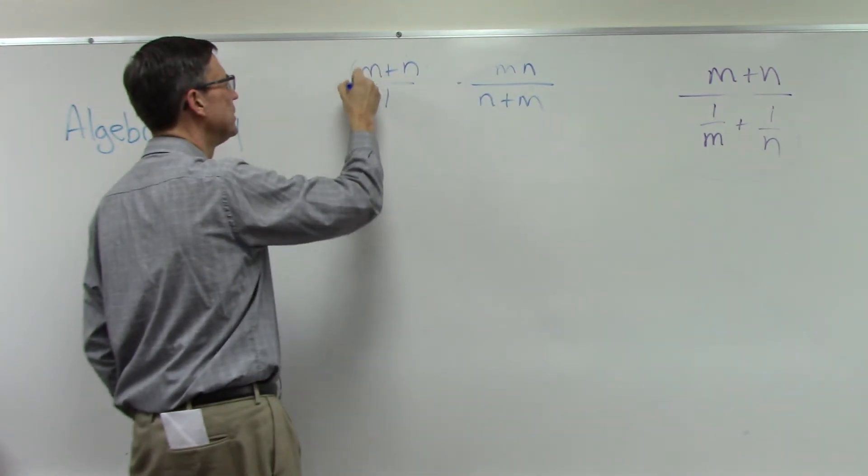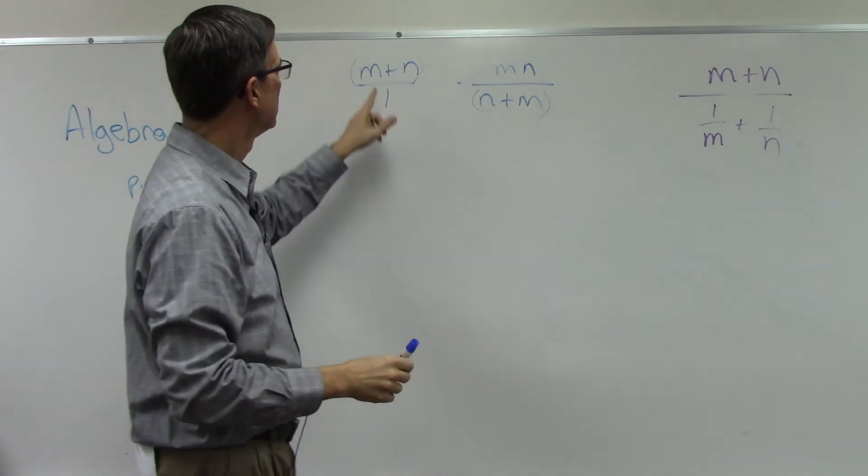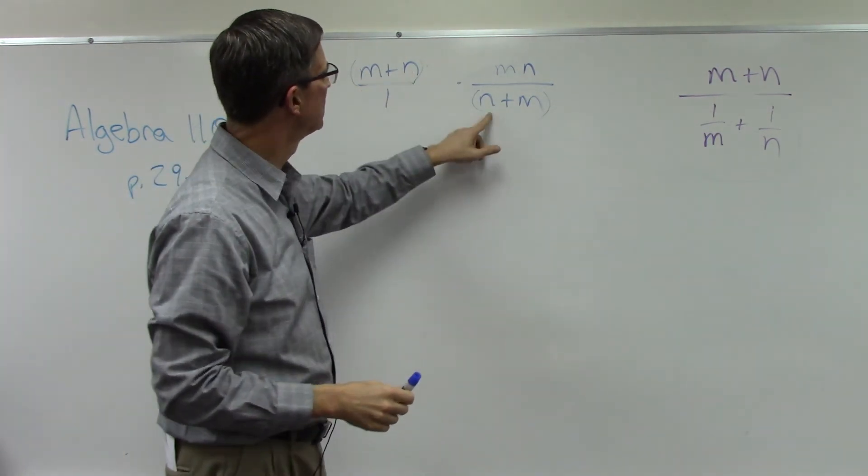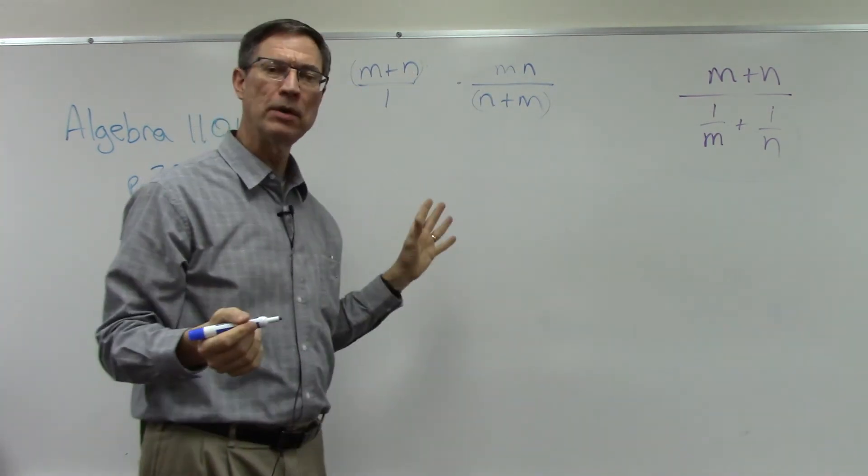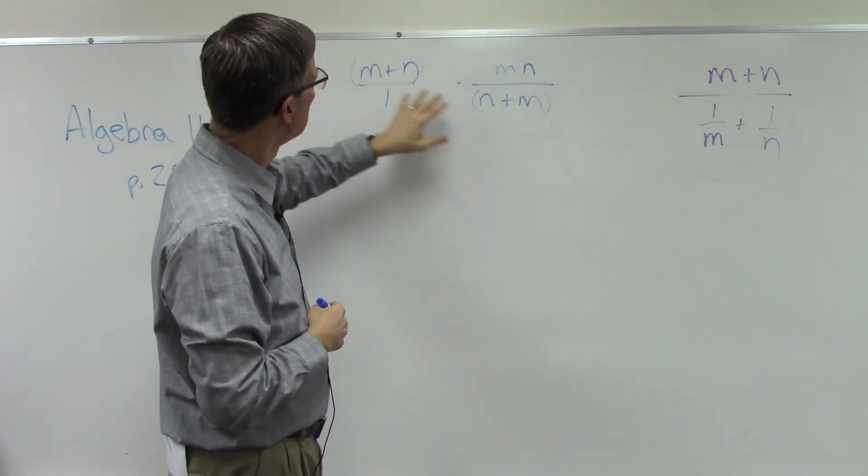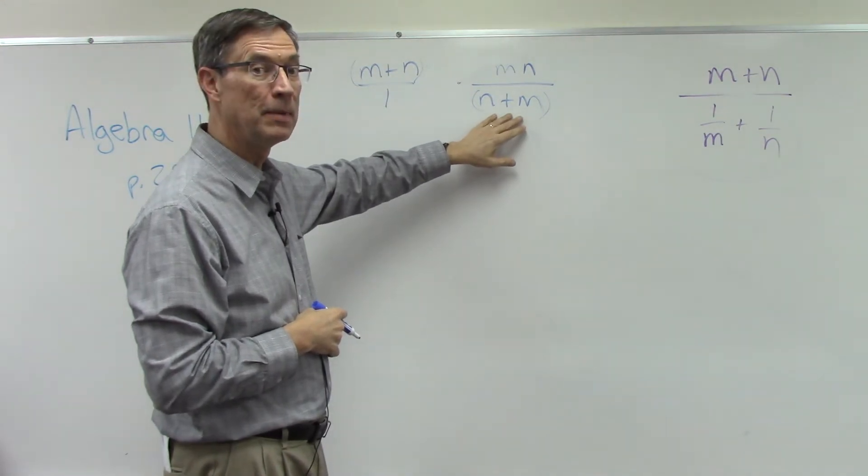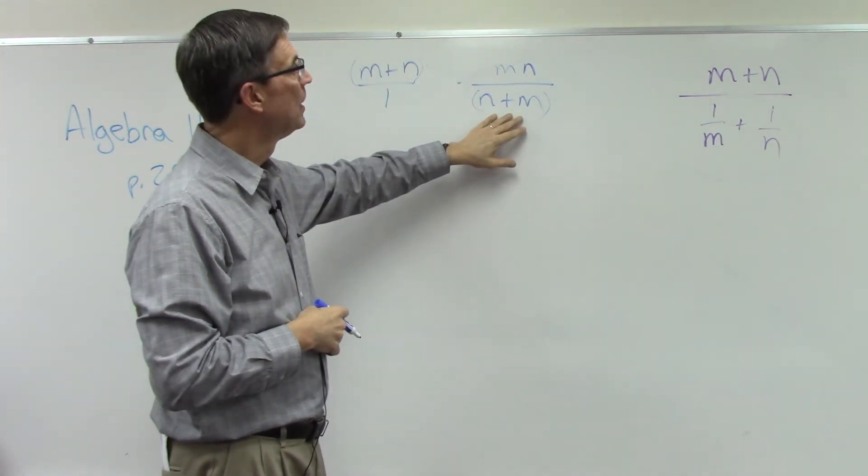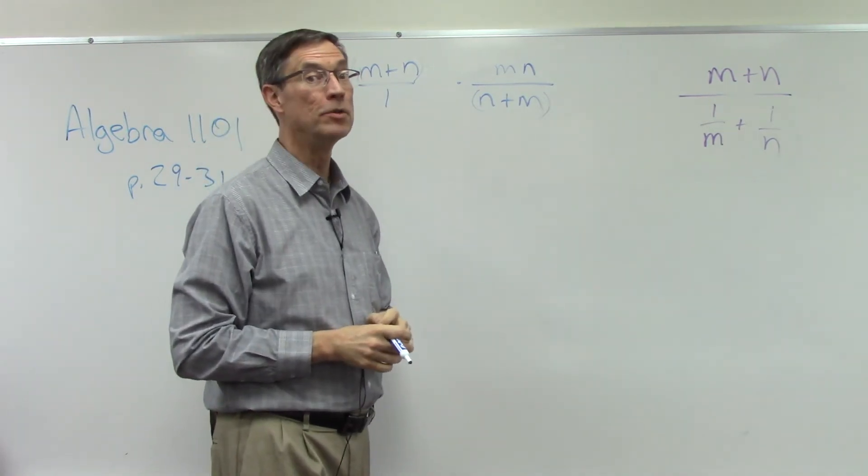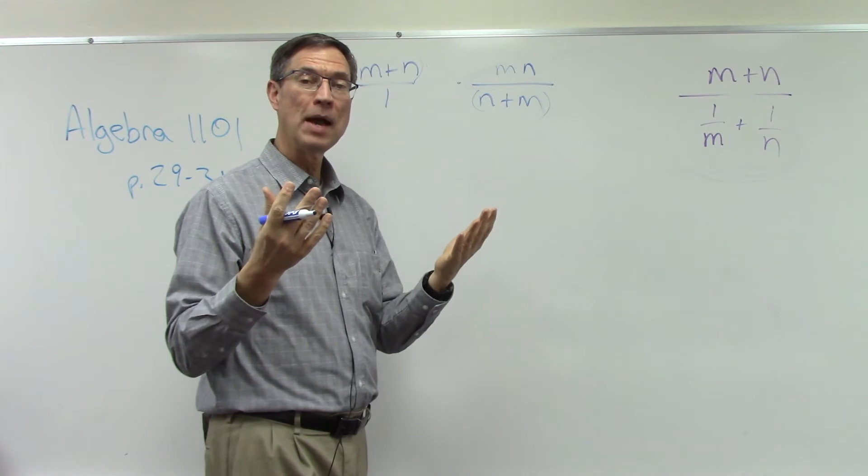I like to put this in parentheses just so I recognize these are protected quantities. I can't cancel the m against the m or the n against the n. Is there anything that cancels out here? So I'm looking at this and it's the m plus n. Is that the same as n plus m? It kind of looks the same.